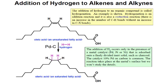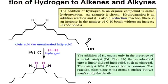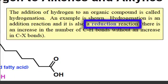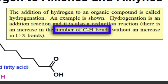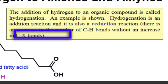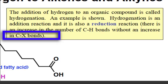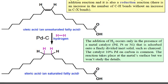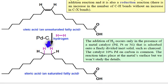Moving on to the hydrogenation of alkenes and alkynes, what you can first notice is that this is a reduction reaction. What that means is that the number of carbon to hydrogen bonds seen in our product will increase without an increase in the number of carbon to heteroatom bonds. And if we take a look at our products, what we can see is that the alkene double bond broke and was hydrogenated.